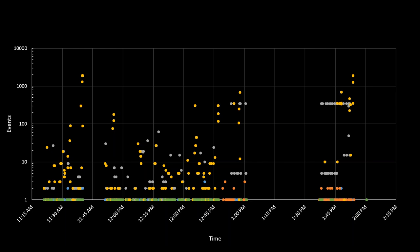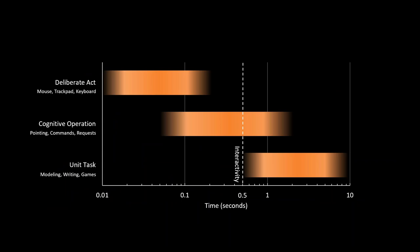As our simulations get shorter, there are more times when we can fit them into our process. The field of human-computer interaction has studied how we react to feedback at different time scales. On the short end we have deliberate acts—muscle movements like moving a mouse. On the longer end we have unit tasks involving thinking and strategy. In the middle we have cognitive operations—individual decisions and queries—and that's the realm where we need simulations to work. We set our target at around half a second for feedback.